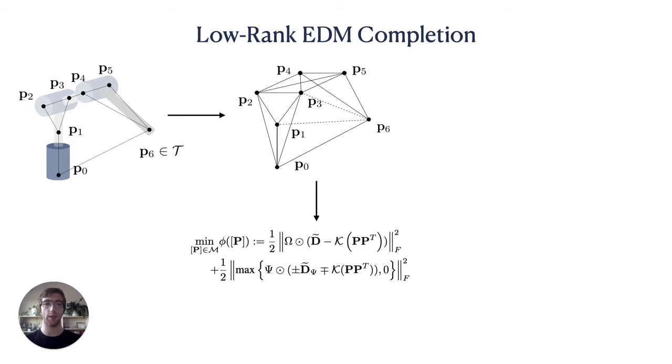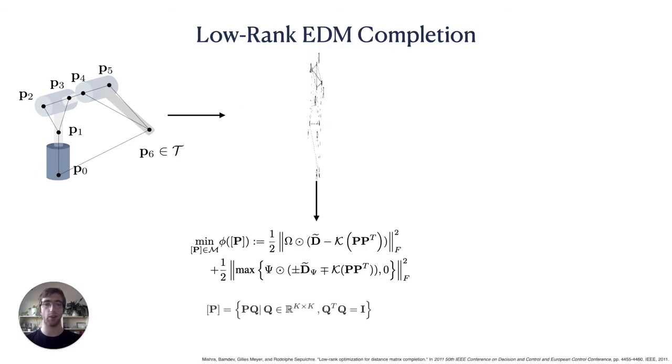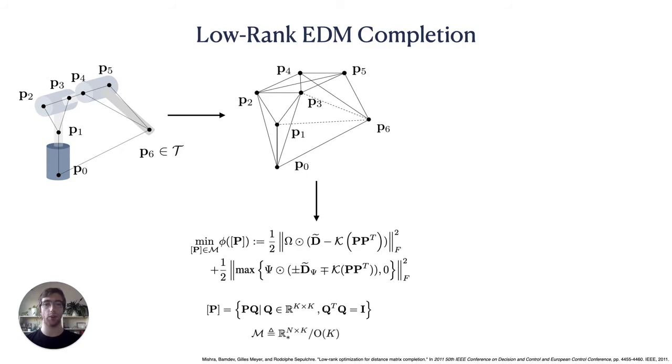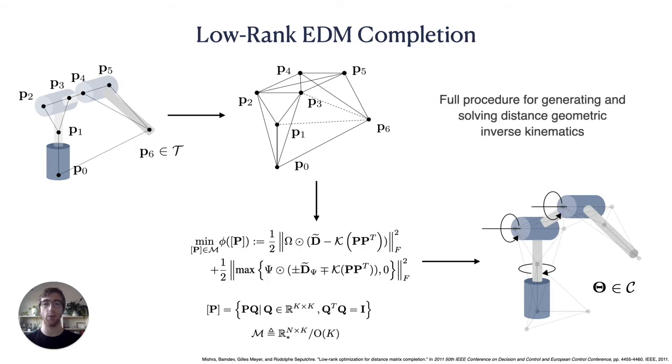Since the distances between points are invariant to rotations and reflections, a solution is actually an equivalence class of all sets of points related by an orthogonal transformation. This approach uses optimization over the Riemannian manifold of all such equivalence classes. Combined with a standard procedure for extracting the angular configuration from this set of points, we have produced a full inverse kinematics pipeline.